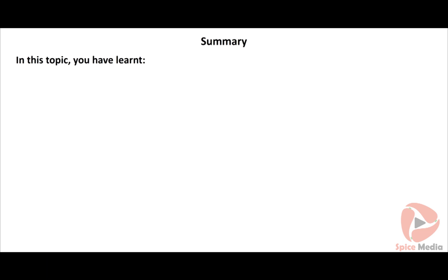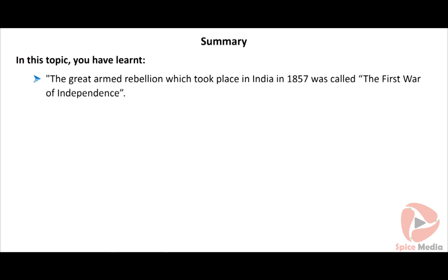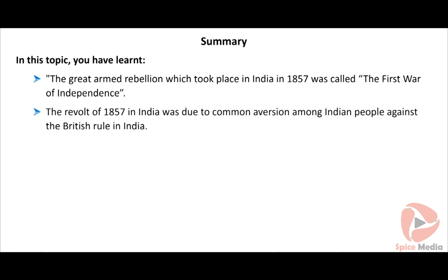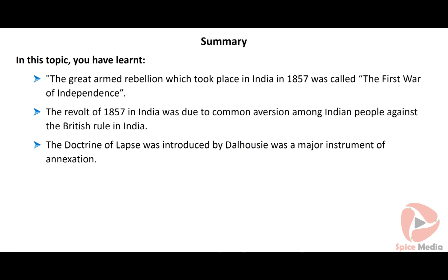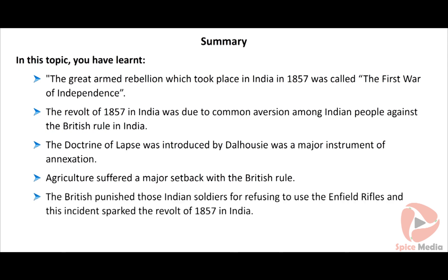In summary: the great armed rebellion in India in 1857 was called the first war of independence. The revolt was due to common aversion among Indian people against British rule. The Doctrine of Lapse was introduced by Dalhousie as a major instrument of annexation. Agriculture suffered a major setback under British rule. The British punished Indian soldiers for refusing to use the Enfield rifles, sparking the revolt of 1857.